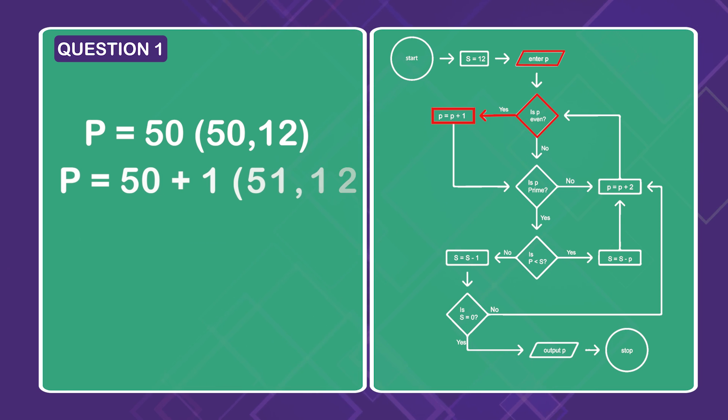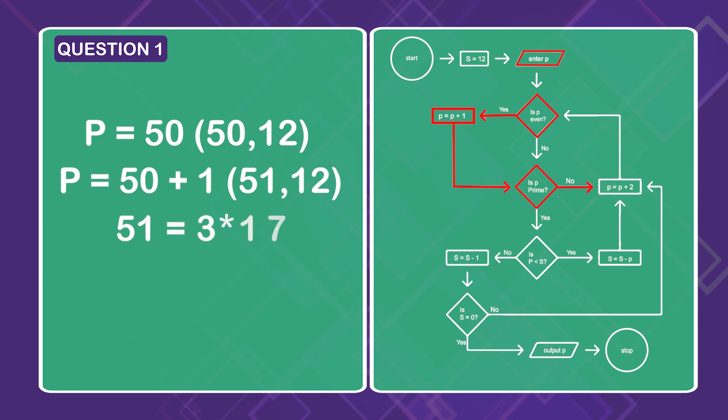Is p even? Yes. So add 1 to get (51, 12). Is p prime? No. 51 equals 3 times 17. So we go around the upper loop.